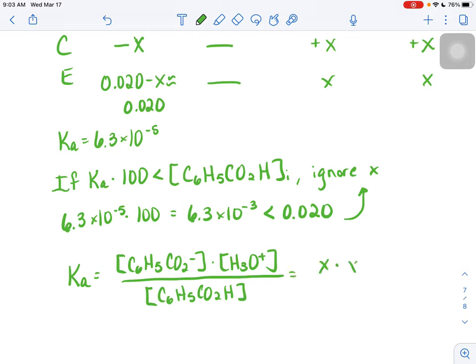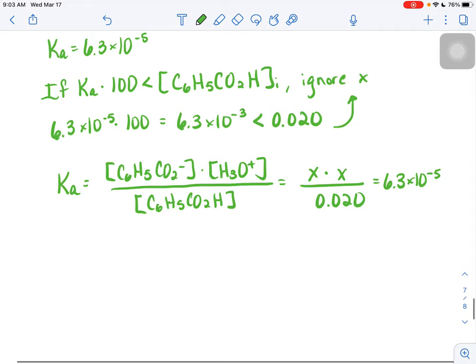This guy was x, this guy was x, and we said that this one was ballpark 0.020, and we know that the value of Ka is 6.3 times 10 to the negative fifth. We looked that up on our chart.